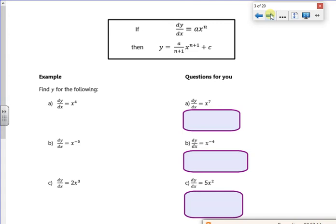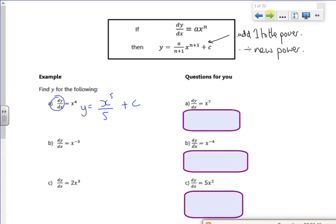So all of these are going back. So all this is saying is, add 1 to the power and then divide by the new power. So if I add 1 to the 4, I get x to the 5, and then that's divided by 5, with a plus c on the end. The dy/dx has gone back to y. So there's one there for you to do.